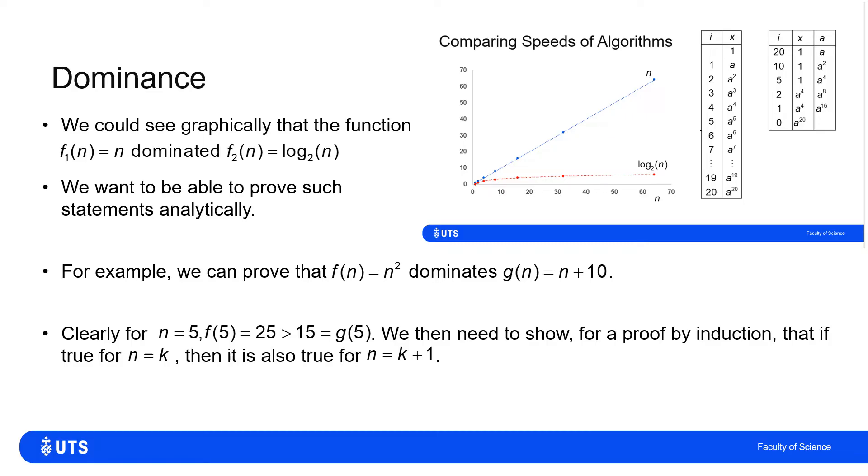So if I set n is 5, then f of 5 is 25, which is greater than 15, which is therefore greater than g of 5. So I've shown that if I start at the fifth value, n is 5, then f is larger, but I want to show that f will always be larger from there on.